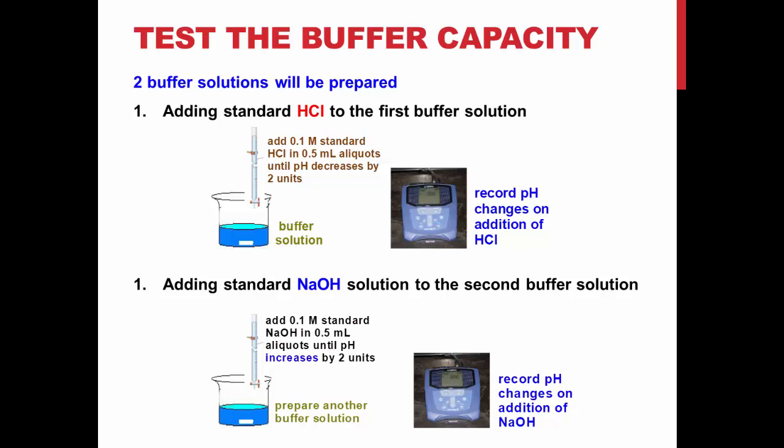For this solution, add base until the pH increases by two units, recording pH and volume of base added for each aliquot, the same way you did for the previous solution.